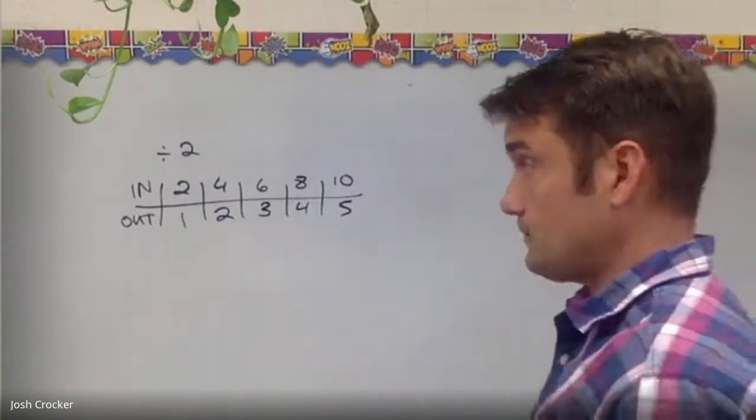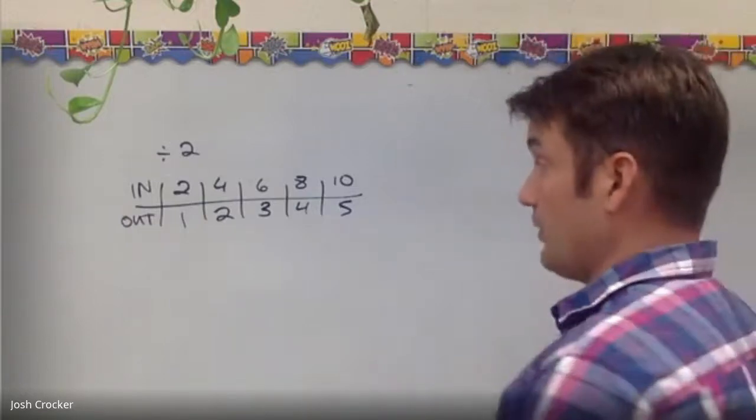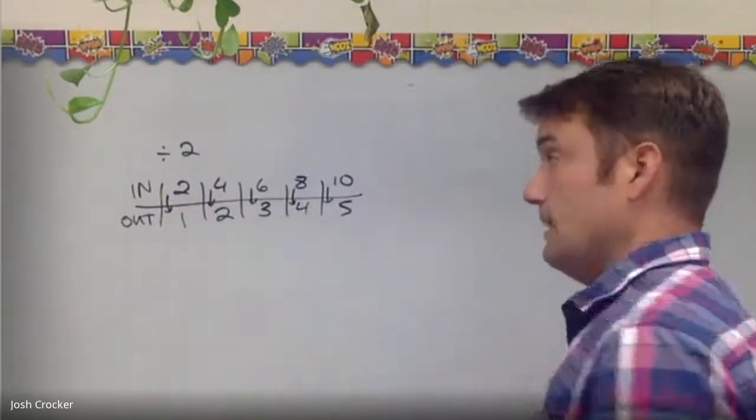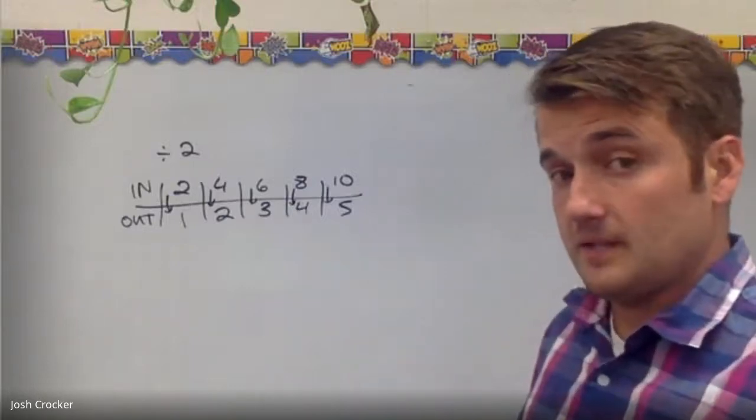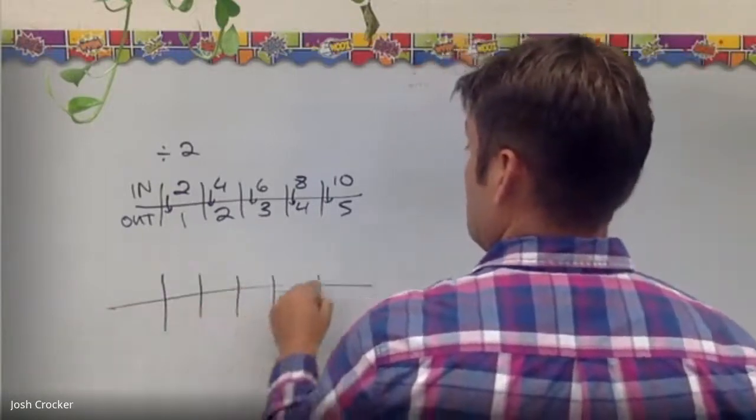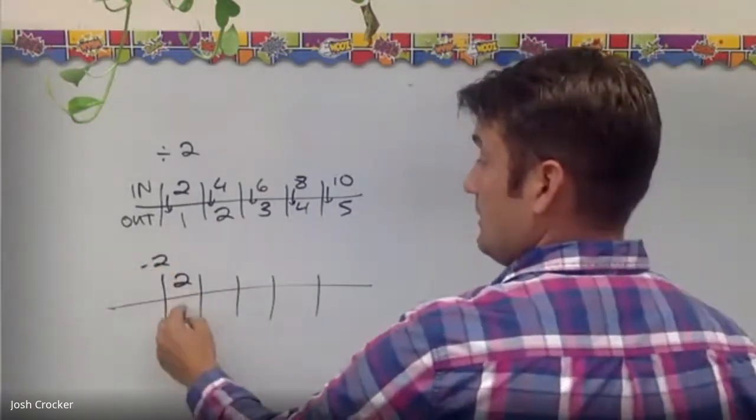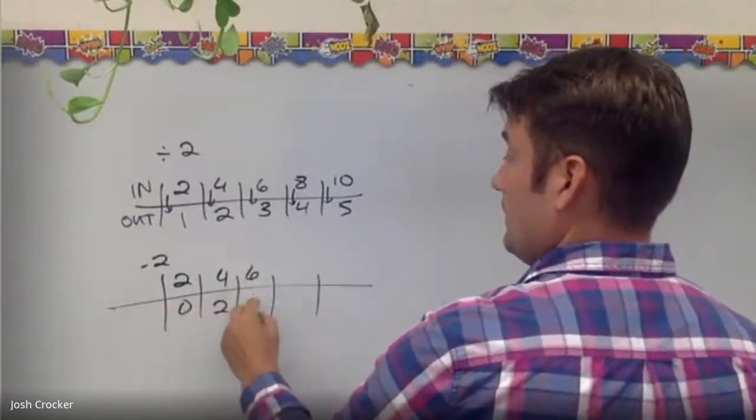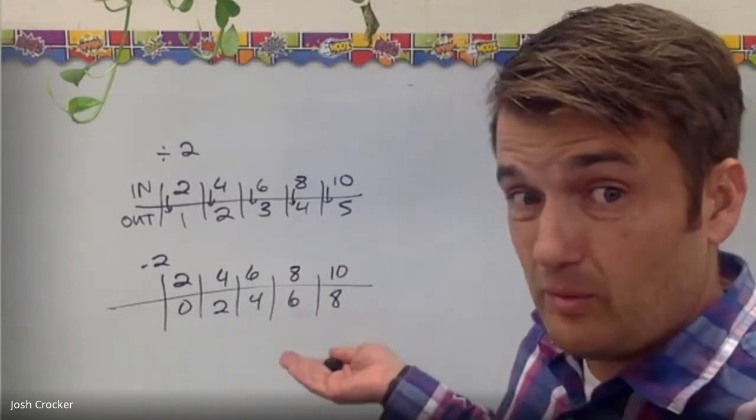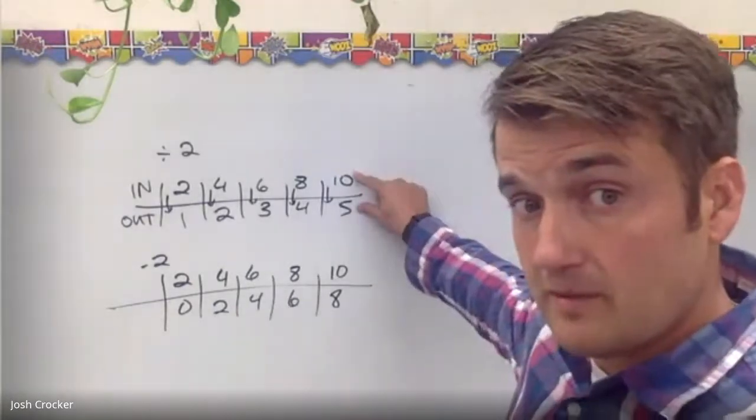So with division like subtraction our numbers are getting smaller. And you can tell that it's division and not subtraction because if this was a subtraction machine and my rule was simply minus 2 the jump would always be 2 right. From 10 to 8 is only 2. Well when I divided the jump was from 10 to 5 was 5.